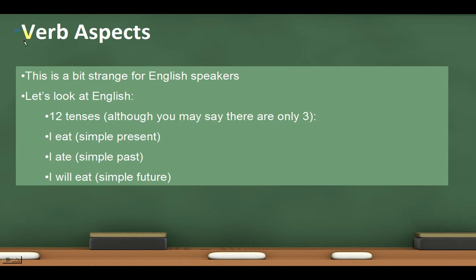Verb aspects are really difficult for a lot of English speakers to understand — it's really a whole different system than what English users use. In English, we usually divide our verbs up into tenses. There are 12 tenses. You may think there are only three: present, past, and future — I eat, I ate, I will eat — and I would say that you're basically right.